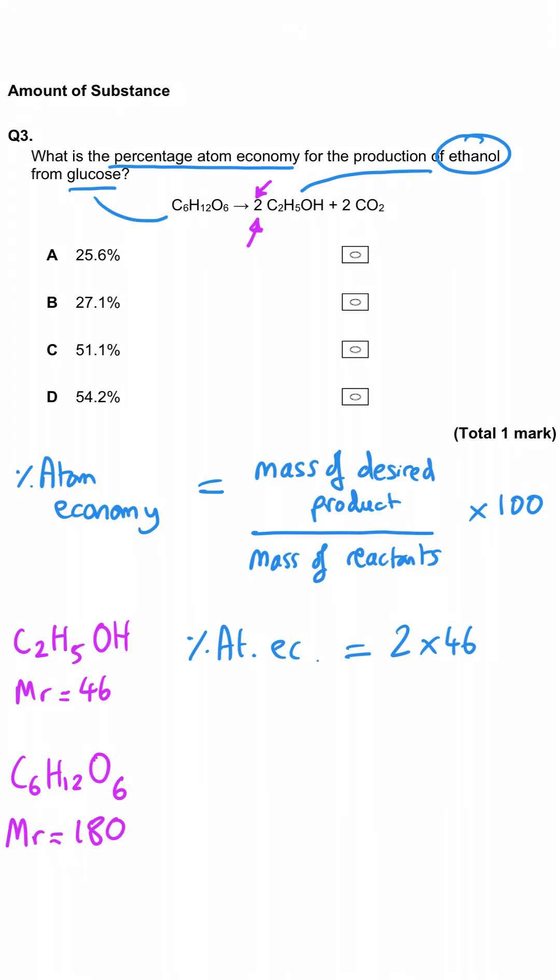So, that gives us 180 overall, and so we need to multiply that by 100 to turn it into a percent. So, 92 divided by 180 multiplied by 100 gives us 51.1% for our final percentage atom economy, so C is the right answer.